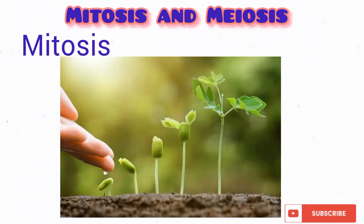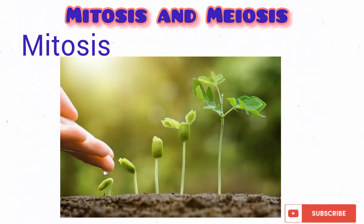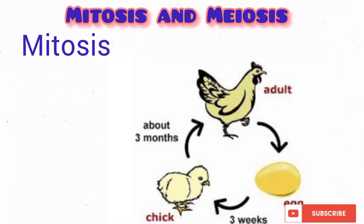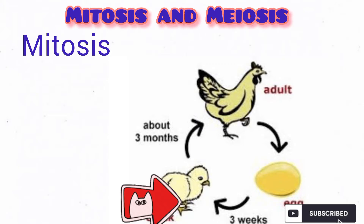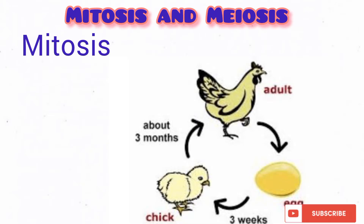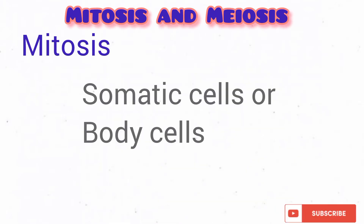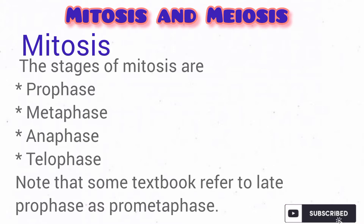Mitosis is the reason why a plant increases in size, as the cells are continually increasing in number and growing. It is also the reason why a small cheek grows to maturity, as the cells in the body increase in size and grow through the process of mitosis. Remember, mitosis occurs in normal body cells, not reproductive cells.